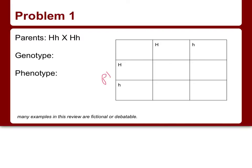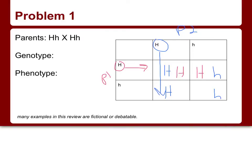Here's our Punnett square with both parents already set up — Parent 1 and Parent 2, both heterozygous. To fill it in, we take the letters from the top parent and bring them down into the boxes, and the letters from the side parent and carry them across. Capital H goes into both columns, lowercase h goes into both columns, and we do the same across for Parent 1. We always put the capital letter first to help organize the genotypes.